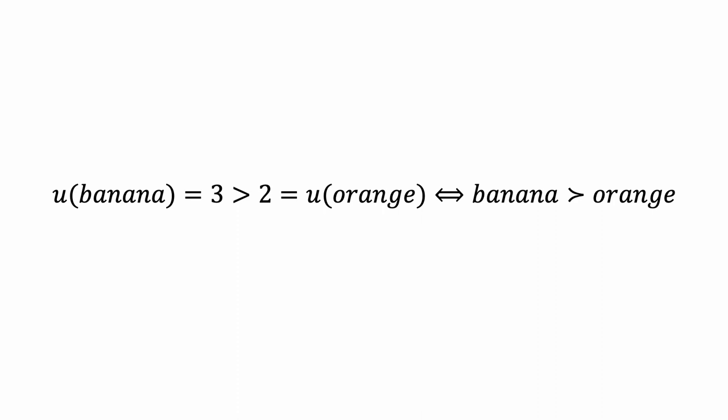This calculation of utility is not how the mind actually works. But under the axioms of completeness and transitivity, the consumer behaves as if they have a utility function u of x_i over outcomes x_i.